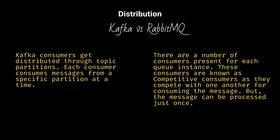Kafka consumers get distributed through topic partitions. Each consumer consumes messages from a specific partition at a time. There are a number of consumers present for each queue instance. These consumers are known as competitive consumers, as they compete with one another for consuming the message. But the message can be processed just once.